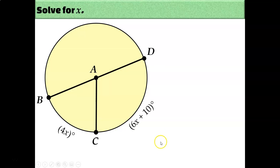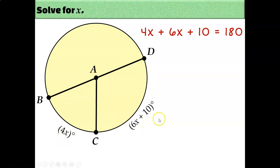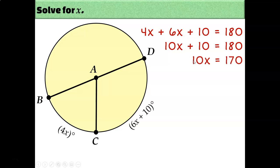Let's incorporate some algebra. To solve for X: arc BCD must be 180 degrees because BD is a diameter, making it a semicircle. So 4X plus 6X plus 10 equals 180. This is the same as linear pairs — these two angles form a linear pair and add to 180. Solving: 10X plus 10 equals 180, so 10X equals 170, and X equals 17.